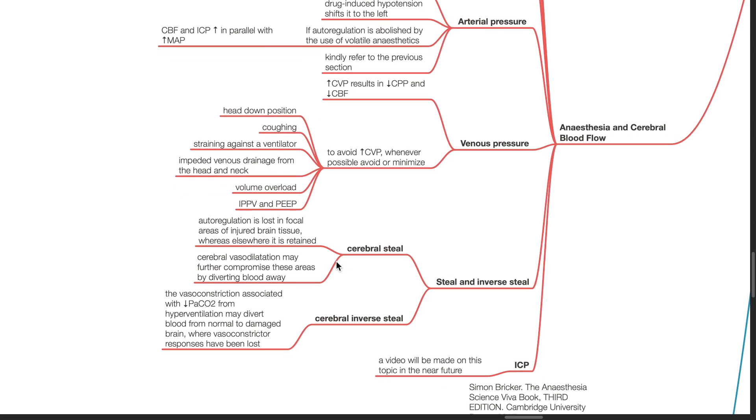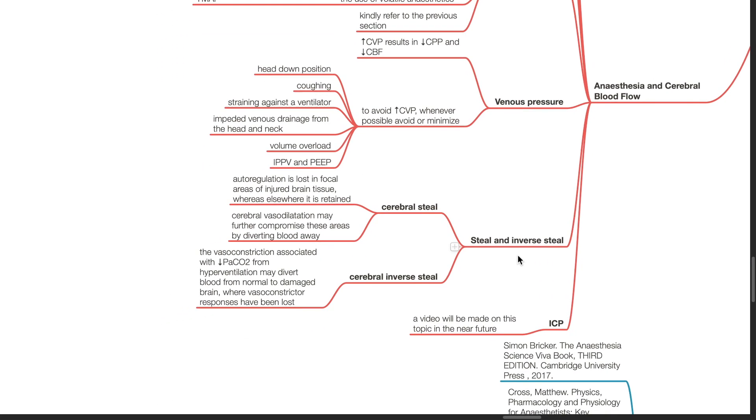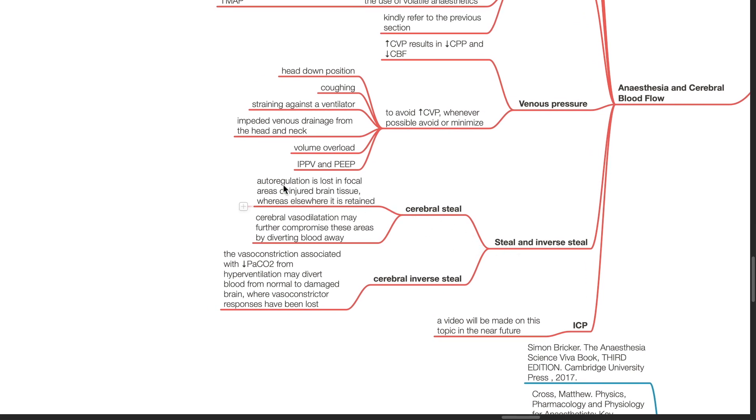Steal and inverse steal. Cerebral steal. Autoregulation is lost in focal areas of injured brain tissue, whereas elsewhere it is retained. Cerebral vessel dilation may further compromise these areas by diverting blood away.